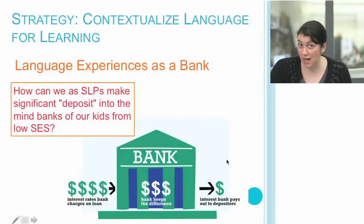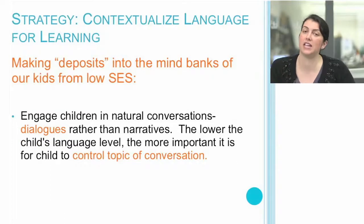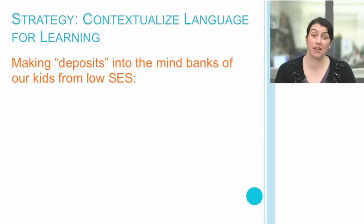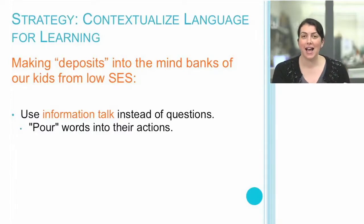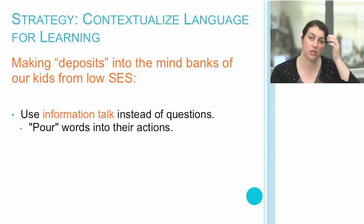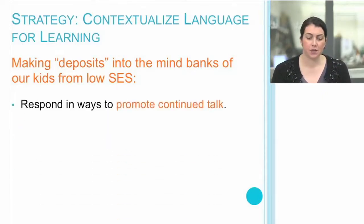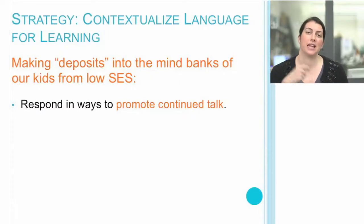So how can we, as speech pathologists and as teachers, make more deposits into the minds of our kids from low-income communities? Some of the ways we can do that are to really engage children in natural conversation and dialogue rather than just talking at them. It's important that students can control the topic of the conversation. We also want to use informational talk and pour words into their actions — as we see them doing something in the classroom, we can narrate what they're doing so they can attach new vocabulary to the actions they're already accomplishing. It's also important to respond in ways that promote continued talk: can you say more about that, or does anyone have a counter argument — and get students to really engage in meaningful dialogue.